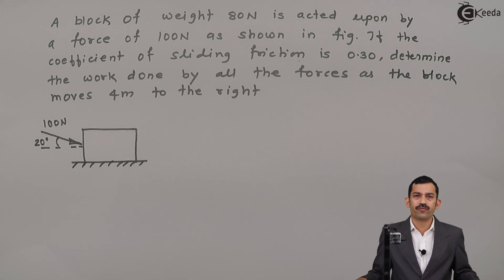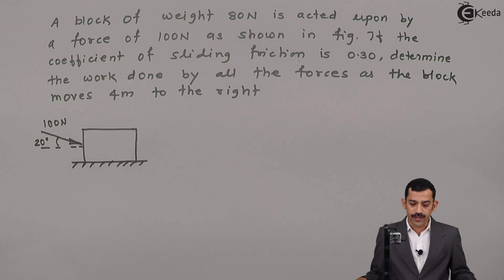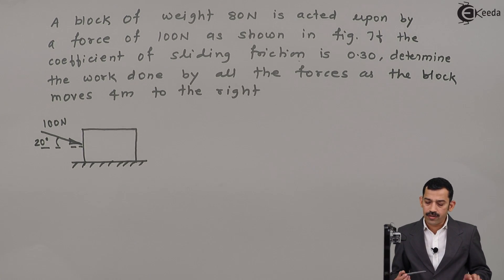What is given in the problem? A block of weight 80 Newton is acted upon by a force of 100 Newton as shown in figure. If the coefficient of sliding friction is 0.3, determine the work done by all the forces as the block moves 4 meters to the right. That means the block moves in the right direction by a distance of 4 meters.